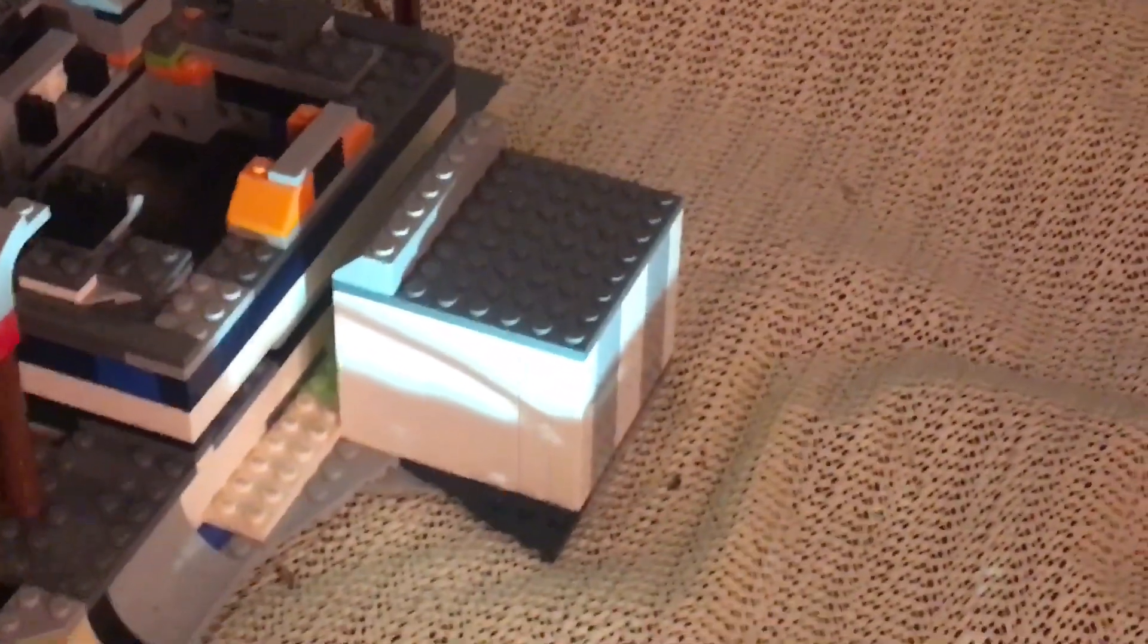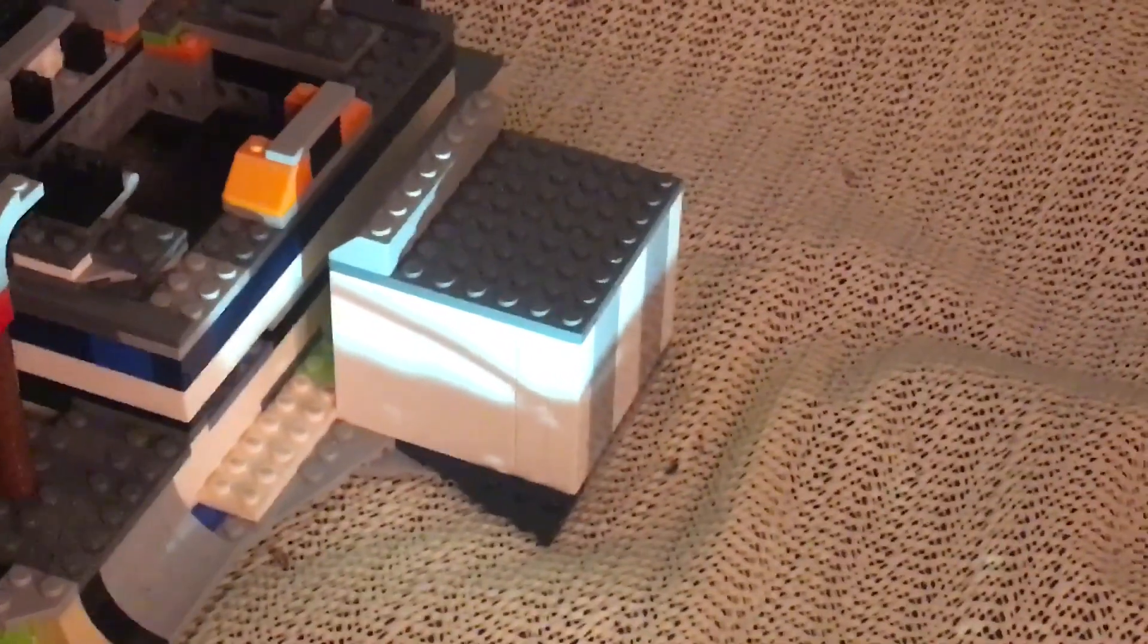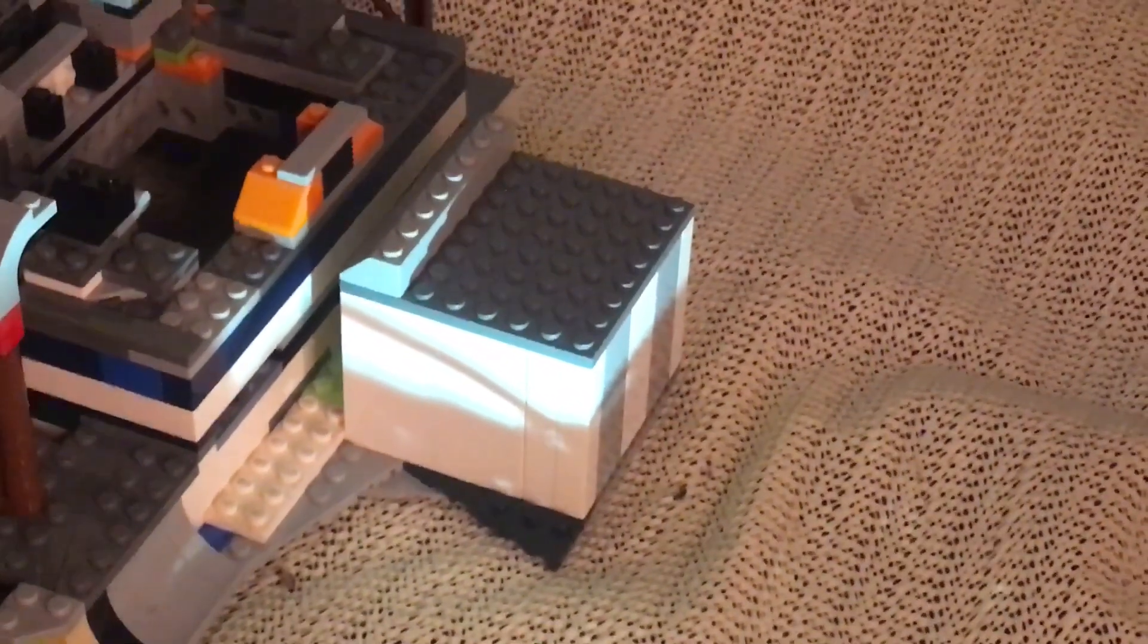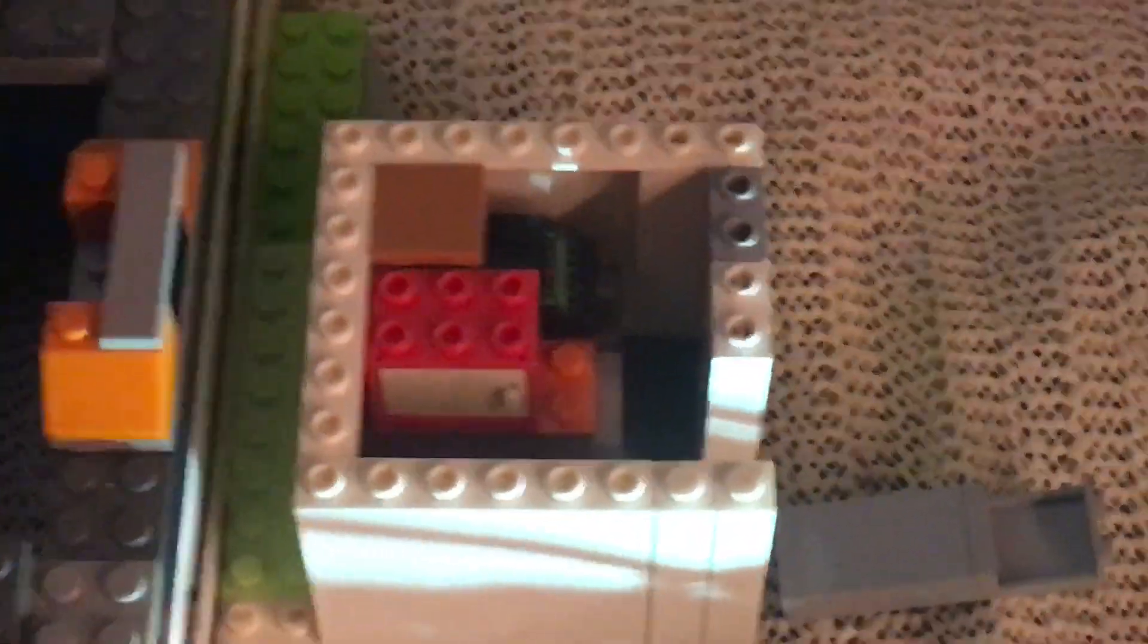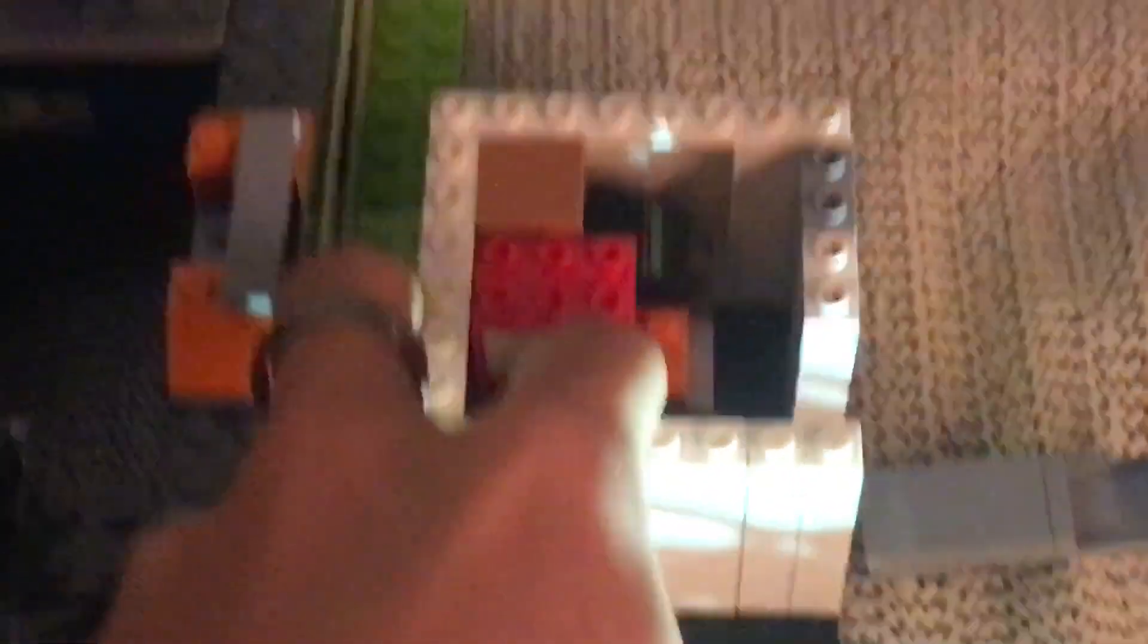And then over here we have the pad deluge system, which sprays water onto Falcon 9 and the launch pad to help suppress the sound during launch. In the very front we have this building. This building is located on the real launch pad as well. I believe it's used to store tools and things that are used to maintain the pad, but inside this one, it is used to just store the extra parts for Falcon 9, which are inside the containers and things like that.